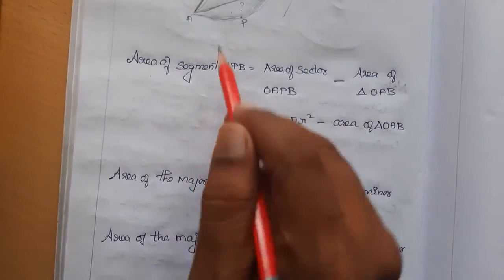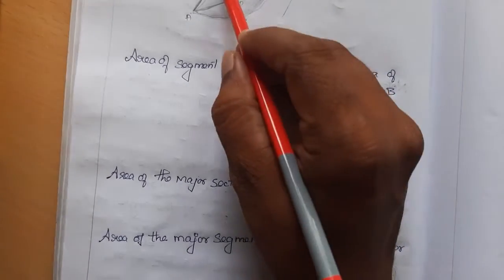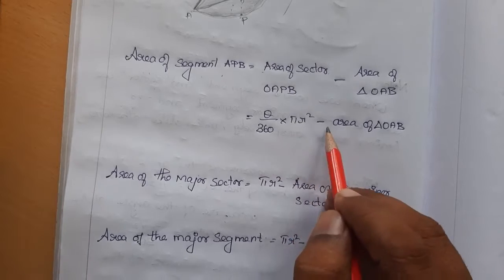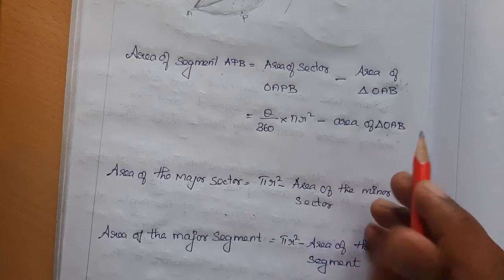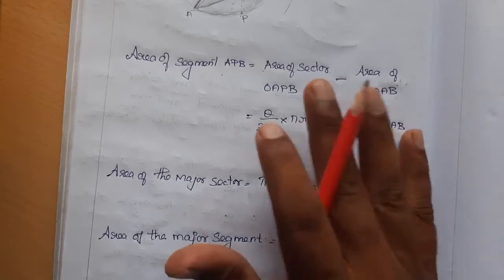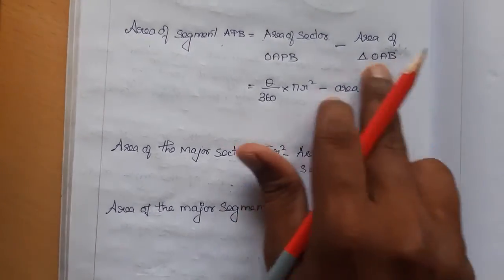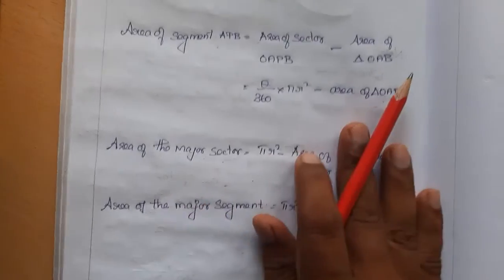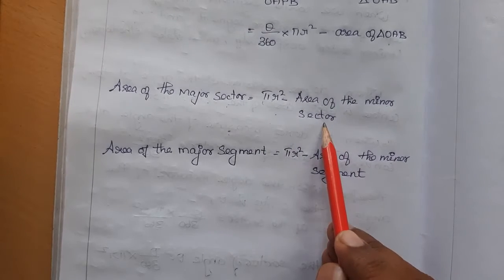To find the segment, we observe that the full shape is the sector and the inner part looks like a triangle. So we only need: area of segment APB = area of sector OAPB minus area of triangle OAB. In formula form: area of segment = (θ/360) × πr² minus area of triangle OAB.